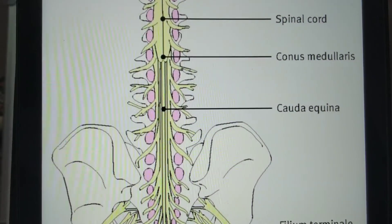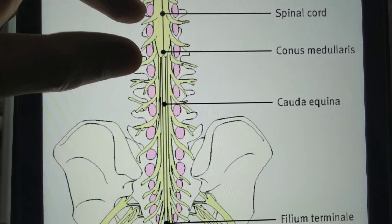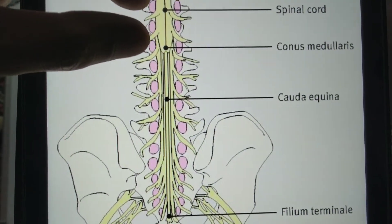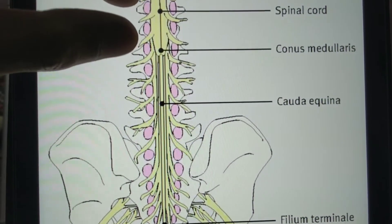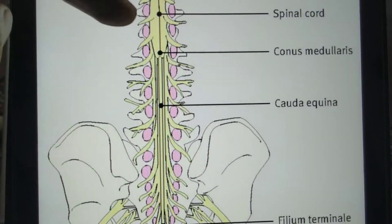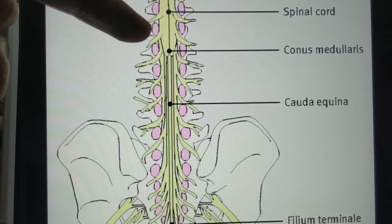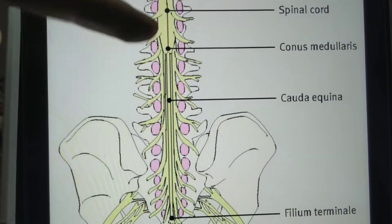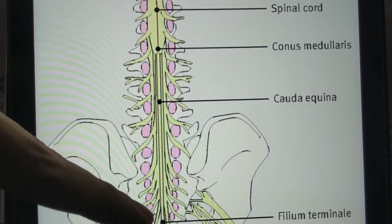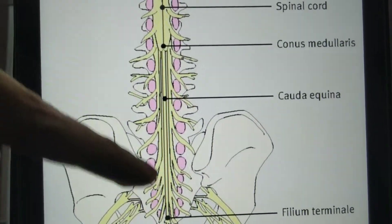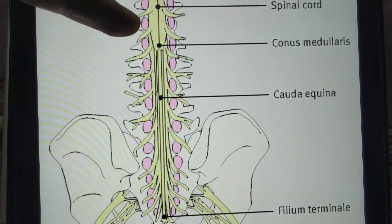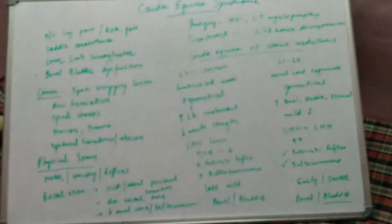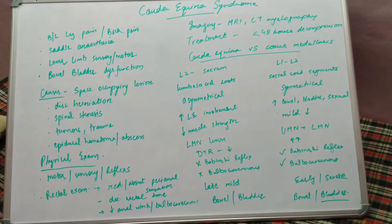Another important structure is the conus medullaris, which is the distal part of the spinal cord at the level of L1 and L2 vertebra. The conus medullaris includes the distal sacral cord segments, including the cord segments and the anterior horn cells. The cauda equina, on the other hand, includes the nerve roots from L2 to S5 — nerve roots, while the conus medullaris includes the sacral cord segments.